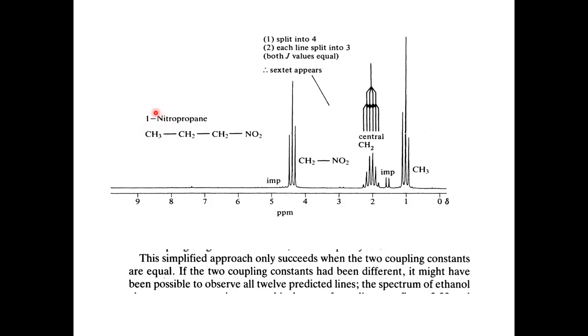So when this is the methyl group, n plus 1 rule applies here. So this is a triplet, this one is a triplet. So this proton also got a triplet. This is the impurity in this case. So what about this proton? If they have different J values, you will expect a possible 12 peaks in this spectra.